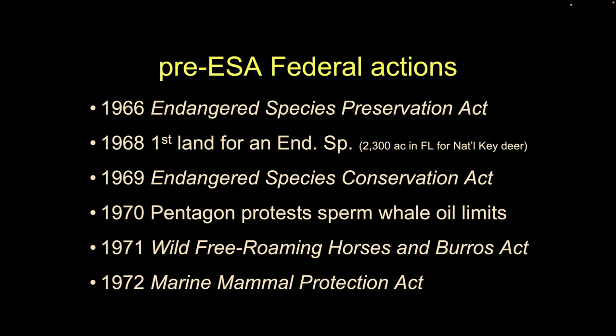Then we get the first formal version — the Endangered Species Preservation Act of 1966 — which takes the red book list and formalizes it somewhat. In 1968, we get the first land set aside specifically for the recovery of what we'd now call an endangered species: the National Key Deer refuge in the Florida Keys, set aside for these little pygmy deer.